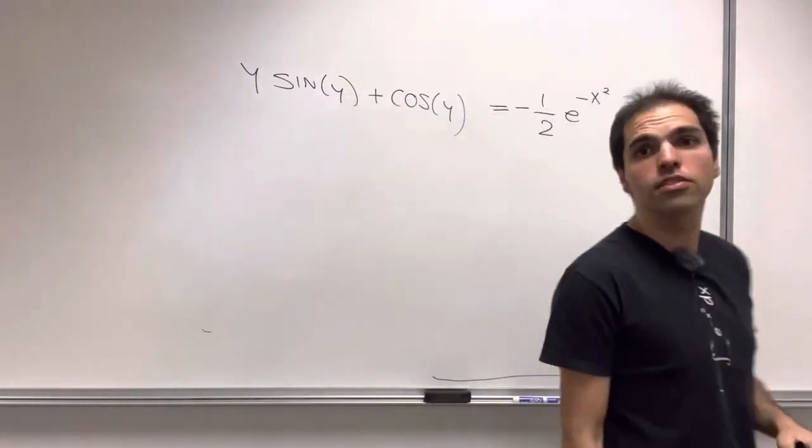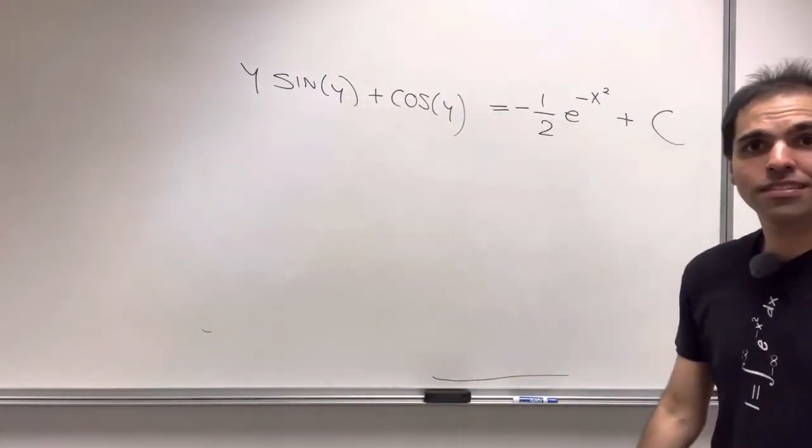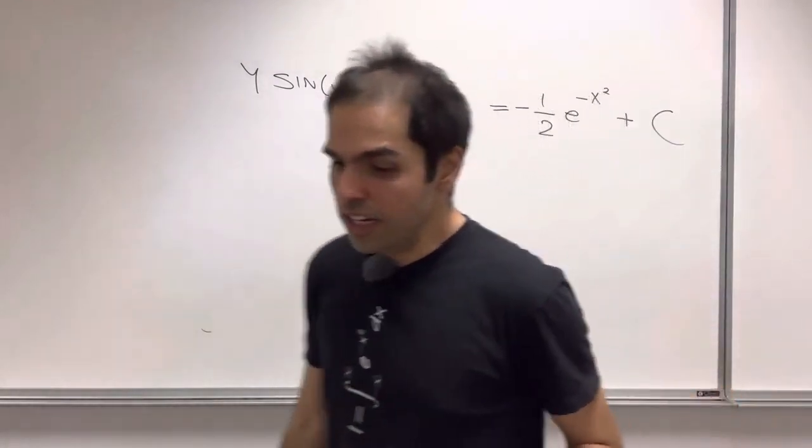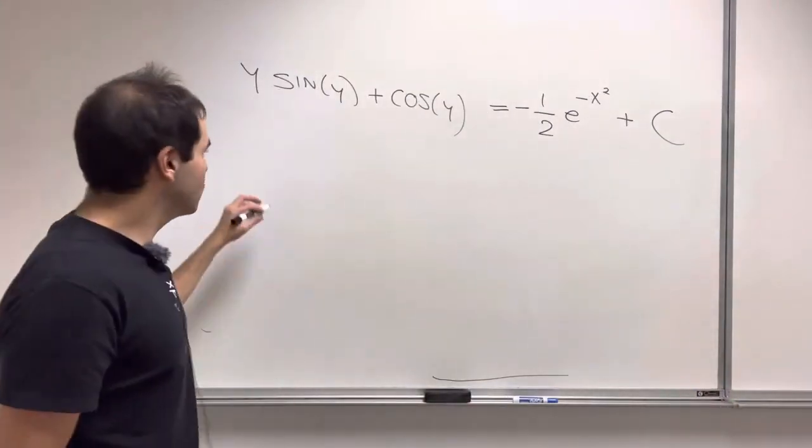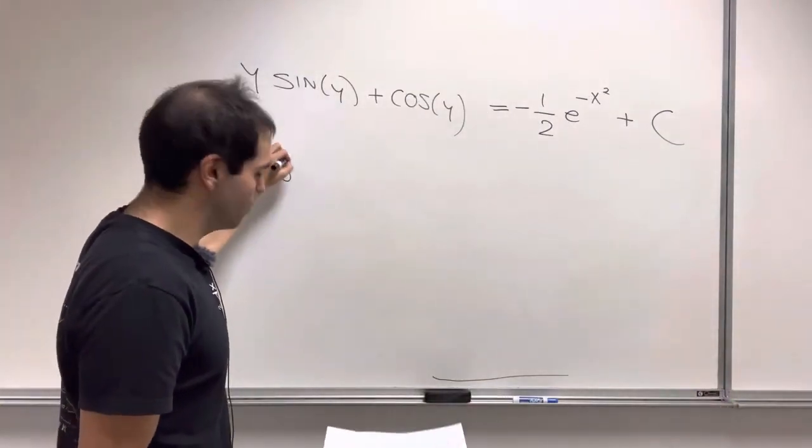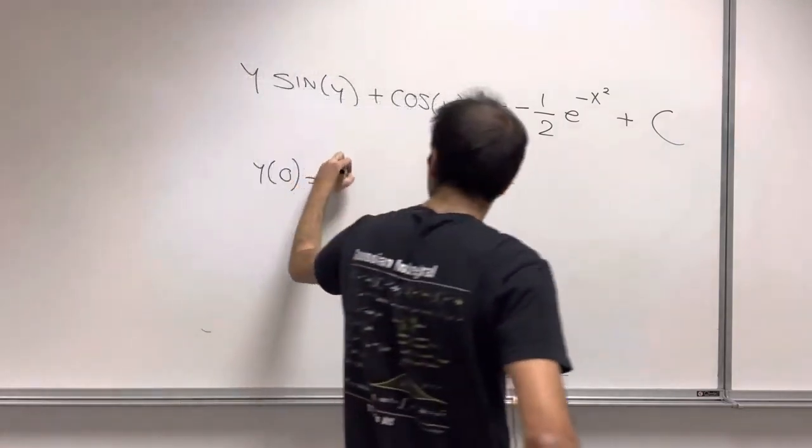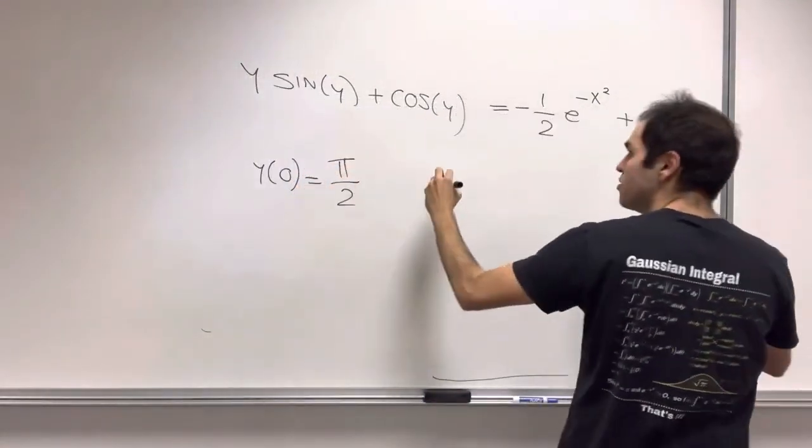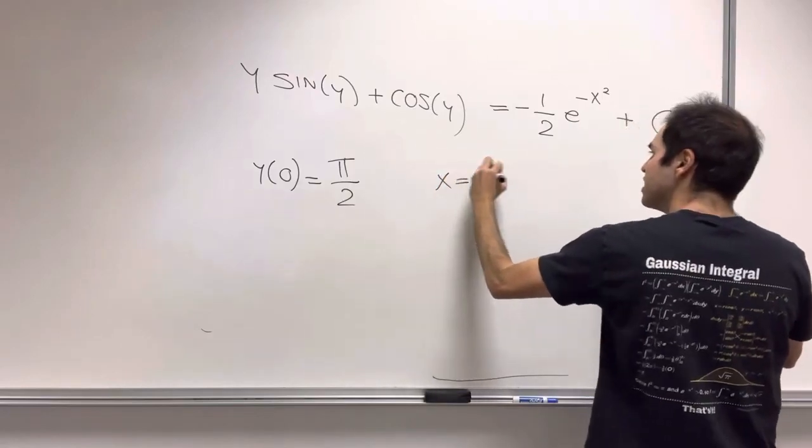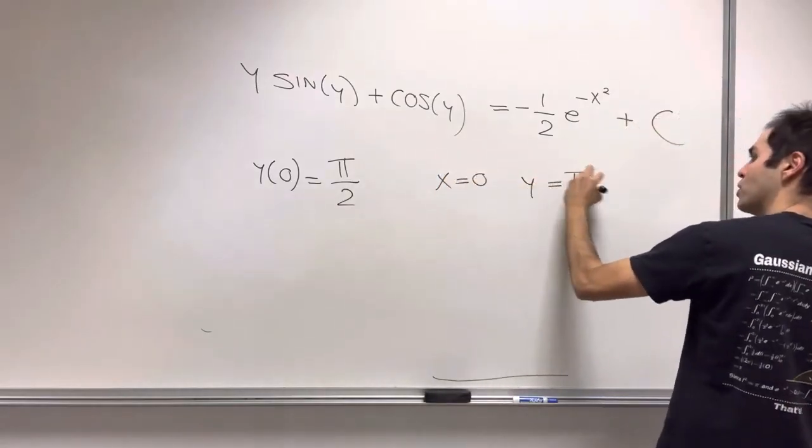However, the good news is we can still solve for that constant using our initial condition. So I think we were given y of 0 equals pi over 2. What this means is that if x equals 0, y is pi over 2.